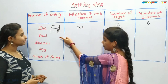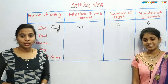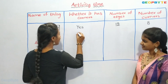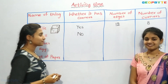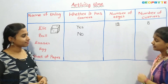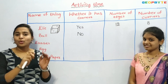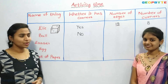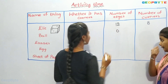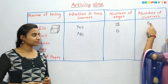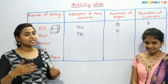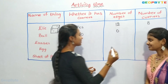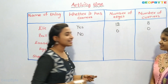Whether a ball has corners — no. A ball is round in shape, so it doesn't have corners. The number of edges for a ball is zero, since it is round. The number of corners for a ball is also zero, since there are no edges.